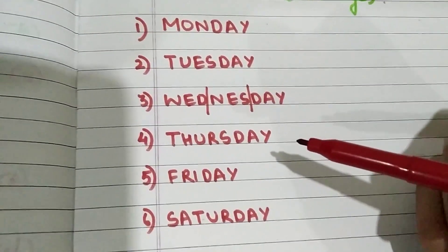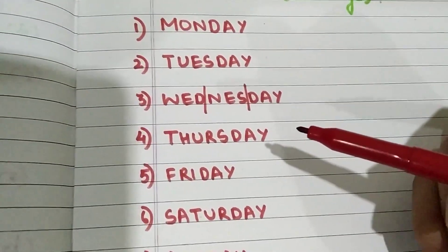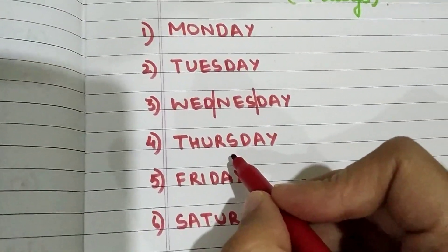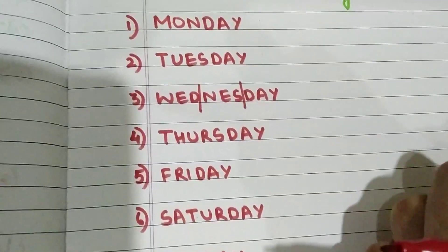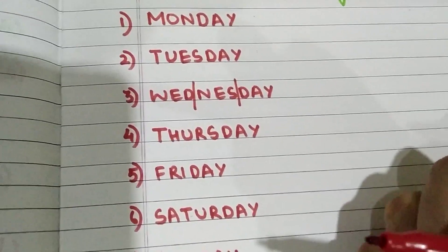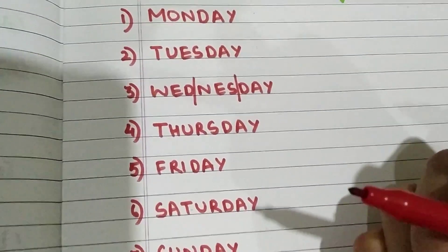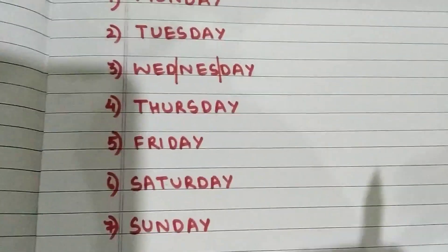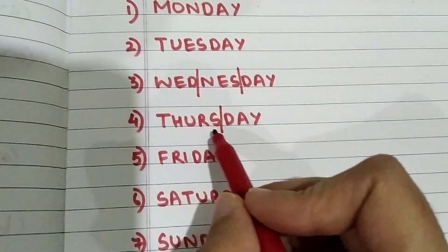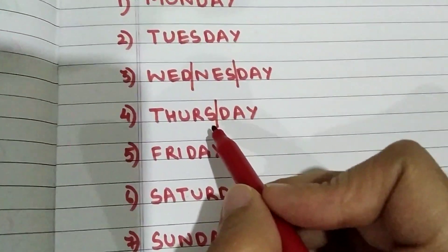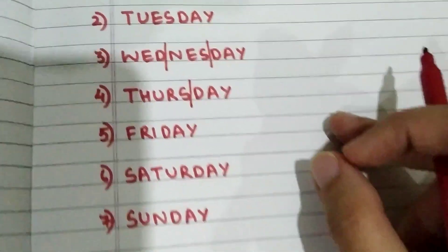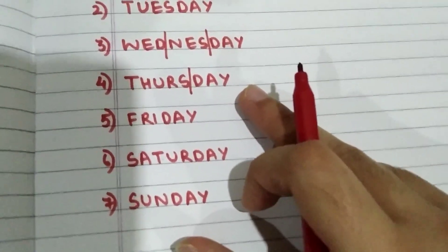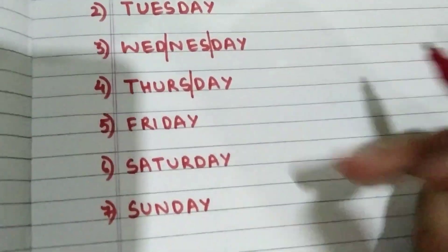The fourth day of the week is Thursday. The spelling is T-H-U-R-S-D-A-Y. Break it into two parts: T-H-U-R is 'Thur', then D-A-Y. Thursday. So Thursday is the fourth day of the week.